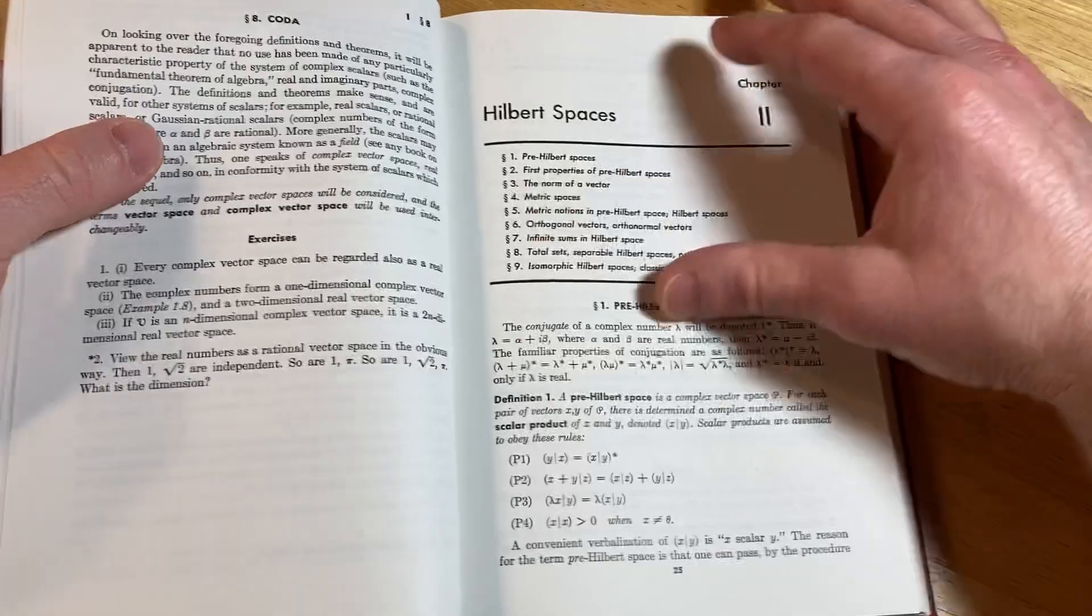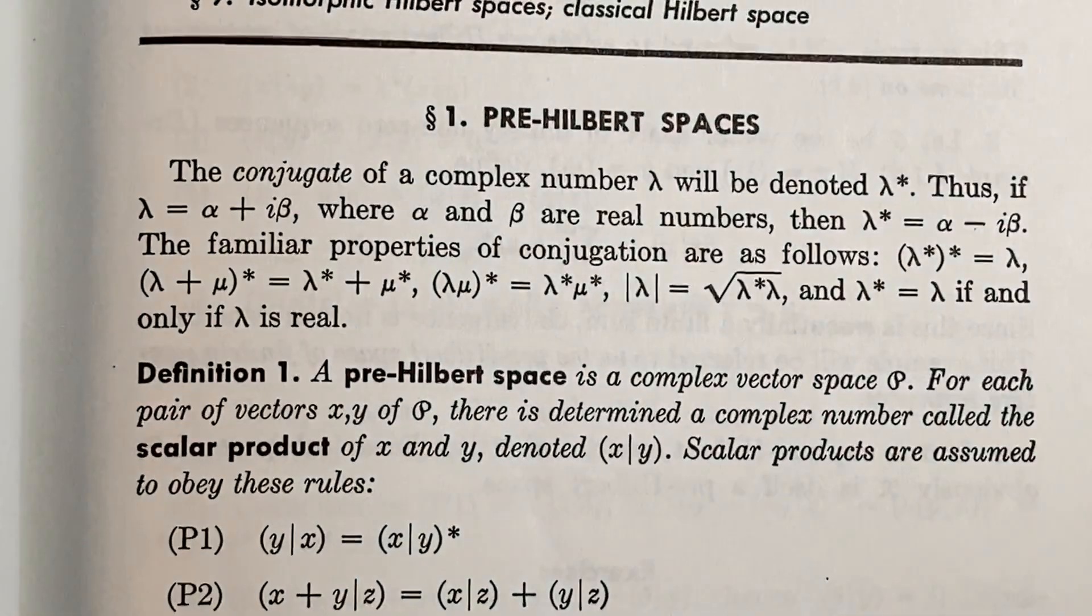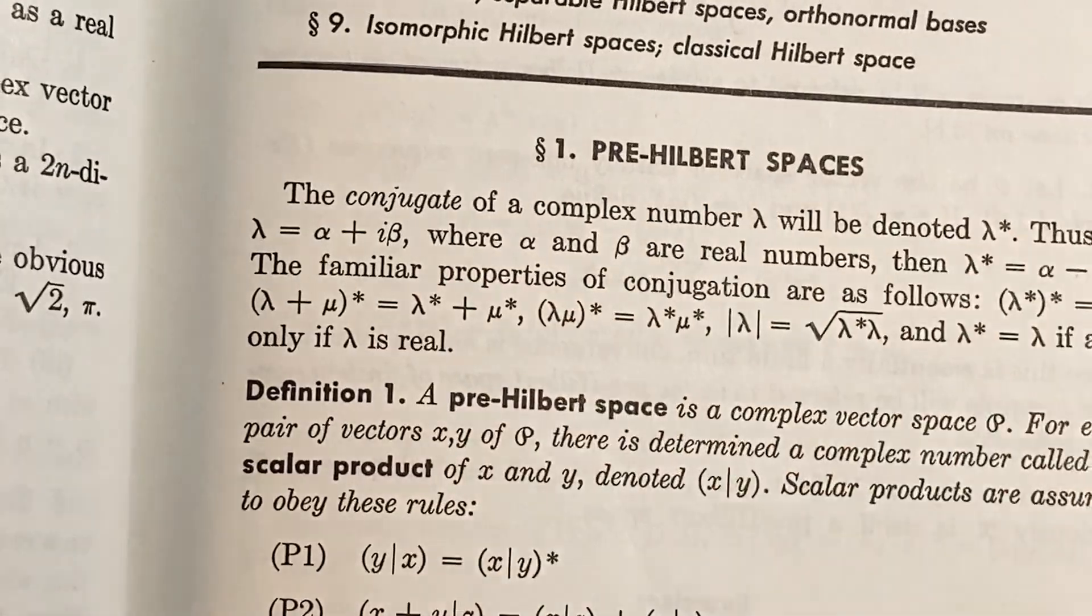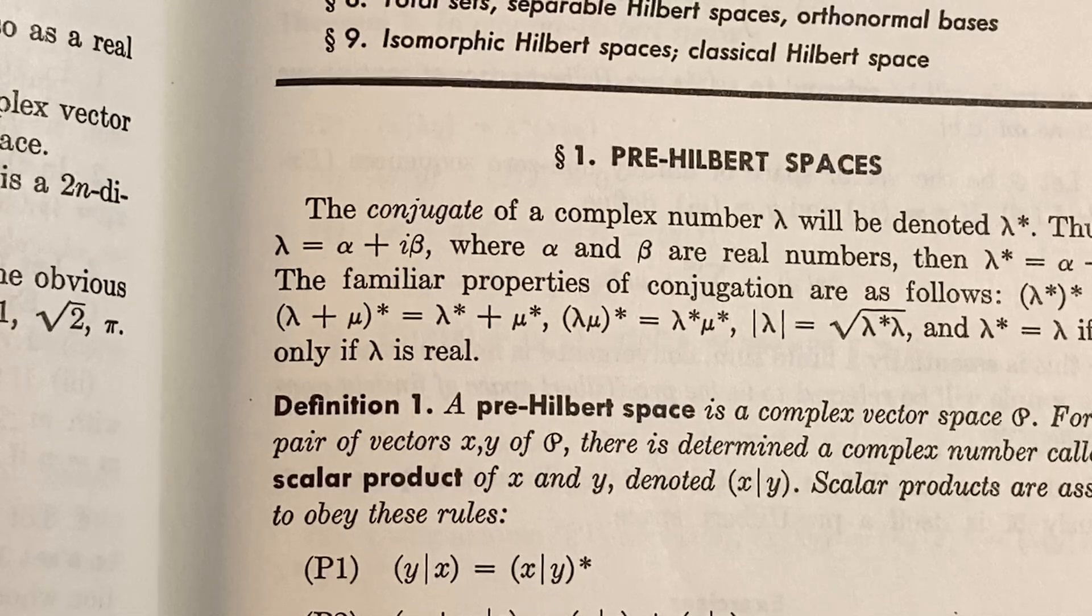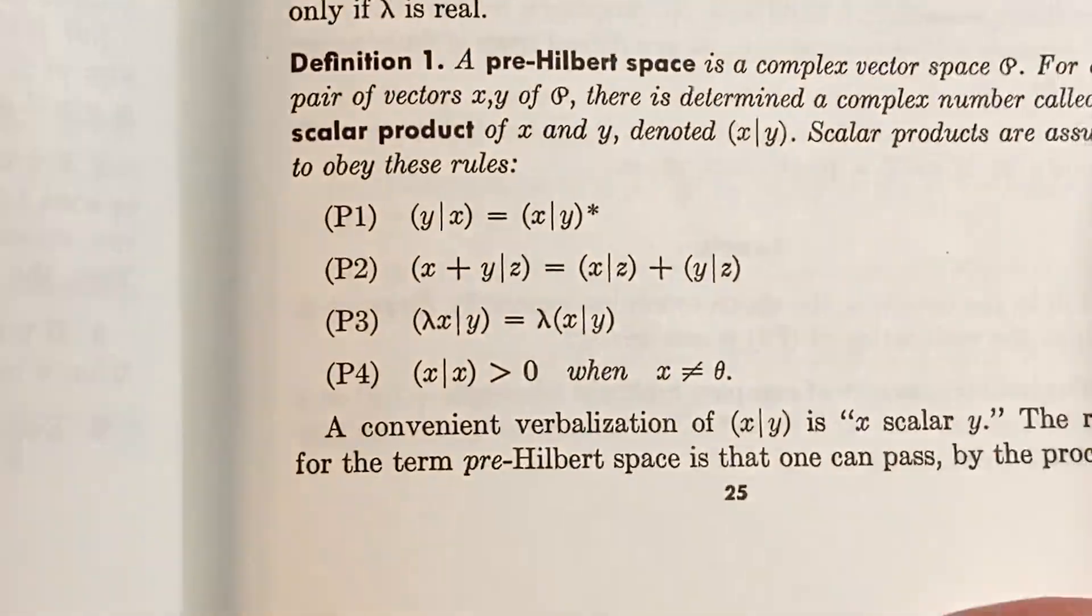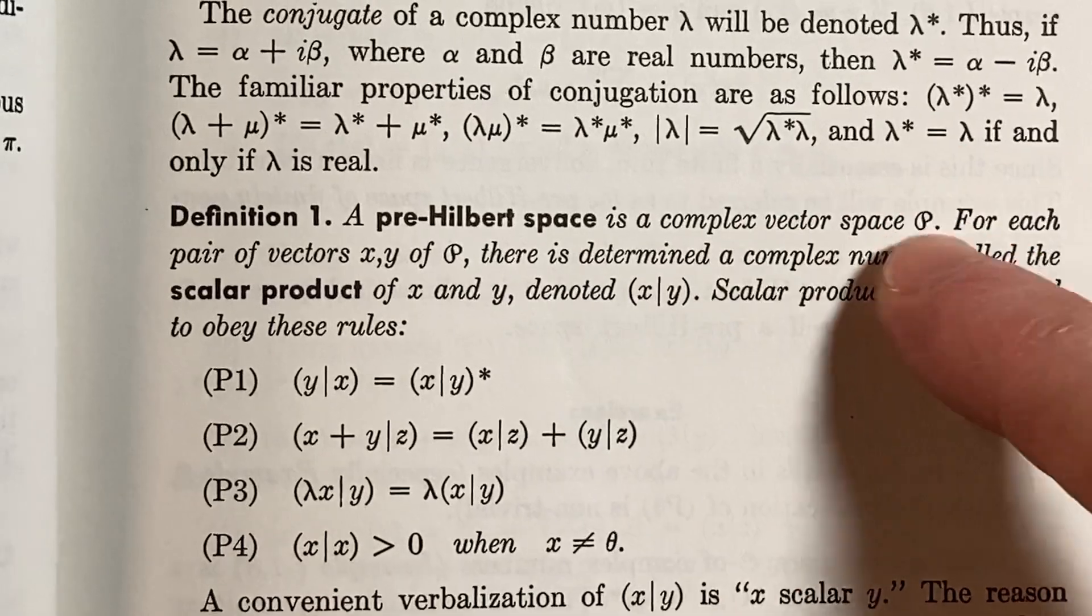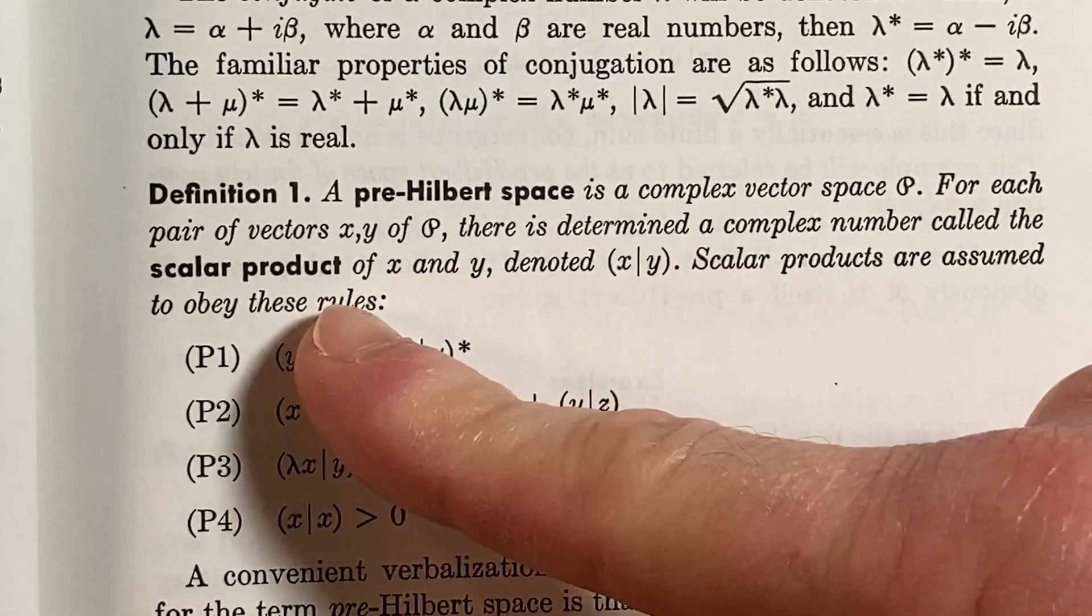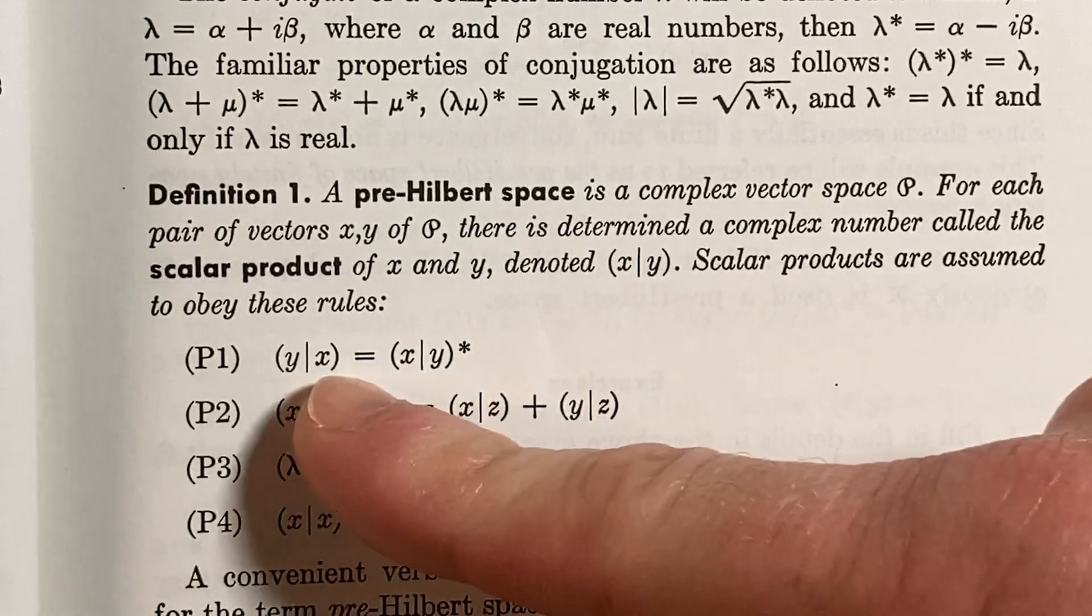So, let's go to Hilbert space. Pre-Hilbert spaces. Here we go, let's look at this. The conjugate of a complex number, lambda, will be denoted by lambda star. Thus, if lambda is equal to alpha plus i beta, where alpha and beta are real numbers, then lambda star is equal to alpha minus i beta. The familiar properties of conjugation are as follows. A pre-Hilbert space is a complex vector space p. That's some fancy letter. I think I'm just going to call it p. For each pair of vectors x, y, and p, there is determined a complex number called the scalar product of x and y. Oh, interesting. Scalar products are assumed to obey these rules.